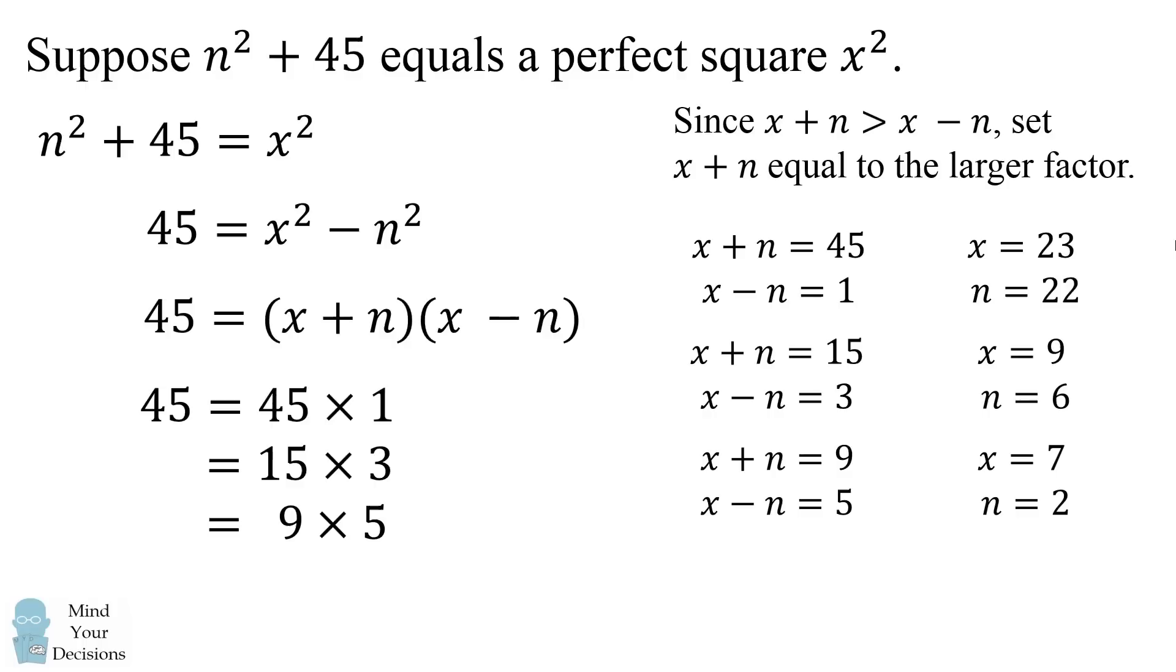So we end up with three possibilities. n can equal 22, 6, and 2. And those are the only ways in positive integers that n squared plus 45 will be equal to a perfect square.